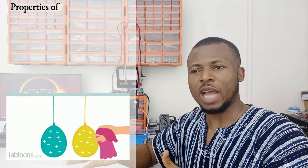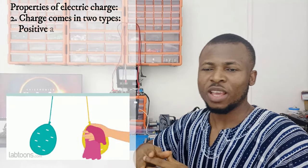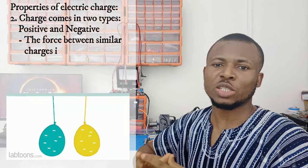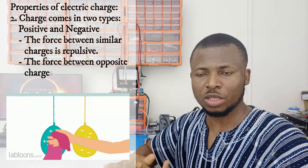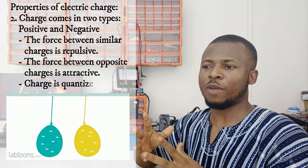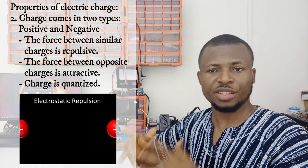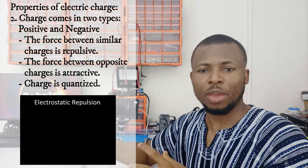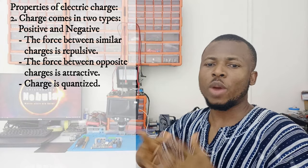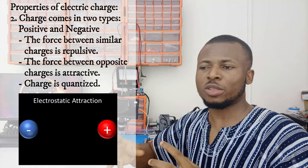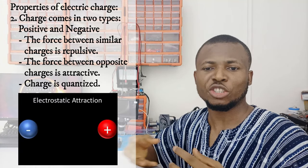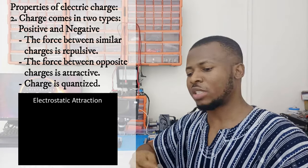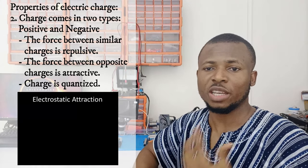Second, the second thing we know about electric charge is that charge comes in two different types — we have the positive and the negative. The force that develops between charges of the same type is repulsive. Hence, if you have two positive charges or two negative charges, they tend to repel each other. When the charges are opposite, the force that develops between them tends to be attractive — that means a positive charge will always attract a negative charge and vice versa.